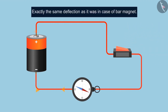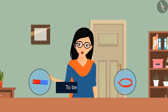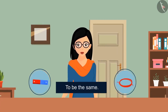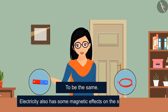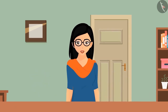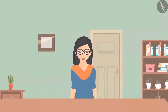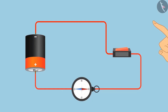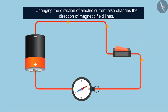The deflection is exactly the same as in the case of a bar magnet. We can consider the bar magnet and the current-carrying wire to be equivalent — it is fair to say that electricity also has some magnetic effects on the surroundings. If electricity has magnetic effects, then like the magnet it must have magnetic field lines. If the direction of electric current is changed in the circuit, the deflection of the needle will be in the opposite direction, which means changing the direction of electric current also changes the direction of magnetic field lines.